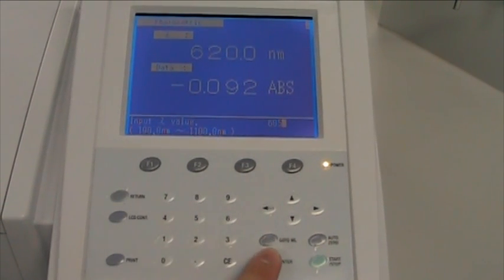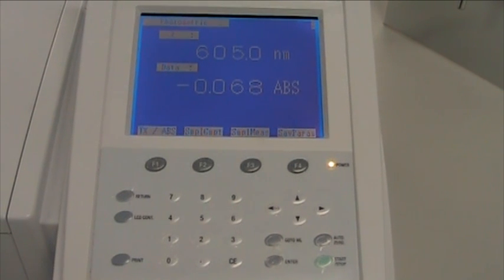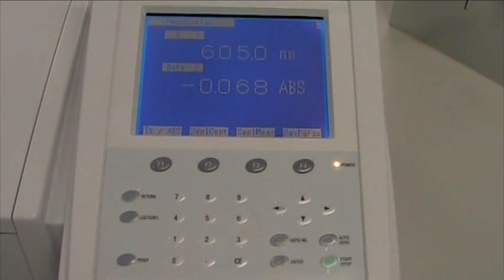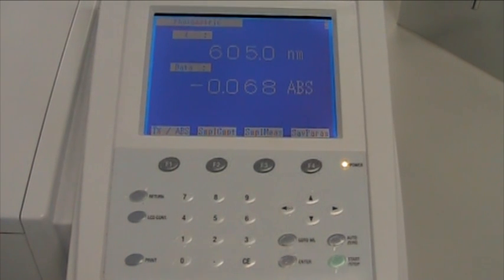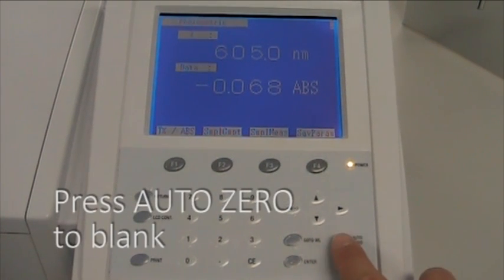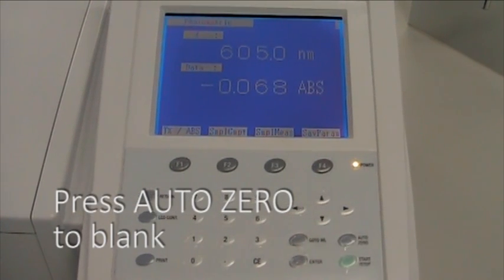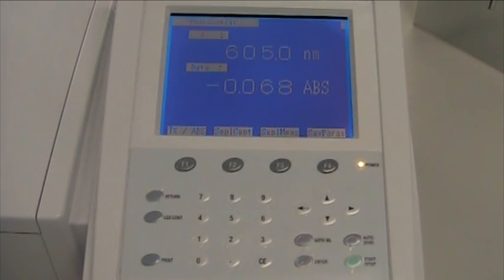Wait until the display shows the new wavelength. To blank the spectrophotometer at this wavelength using the blanking solution you just inserted, press the auto 0 button. Wait until the machine beeps and the absorbance reading is 0.